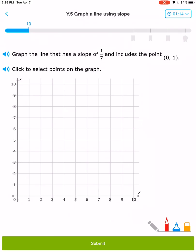Again, includes the point (0, 1). That's first. So 0 over 1 up. And then if I'm going to graph a line that has a slope of 1/7, that means I'm going to go up 1 over 7.